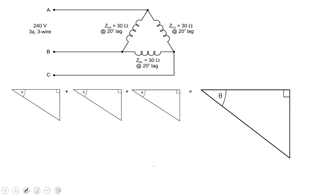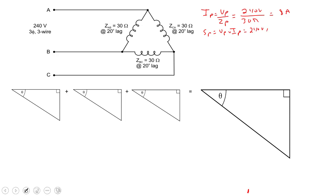To find the phase current I take the phase voltage divided by the impedance in each phase. In delta, line and phase voltages are the same value, so 240 volts divided by 30 ohms gives about 8 amps. The apparent power in each phase equals V_phase times I_phase: 240 volts times 8 amps equals 1920 VA.